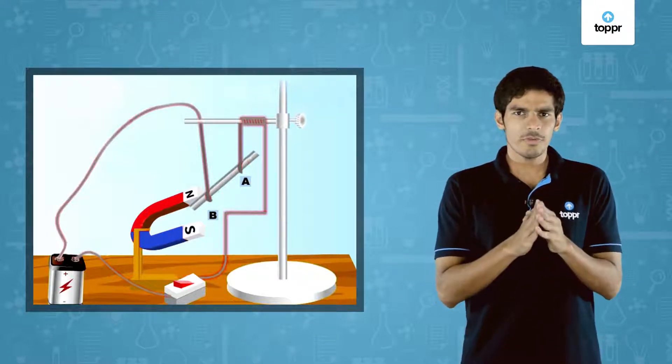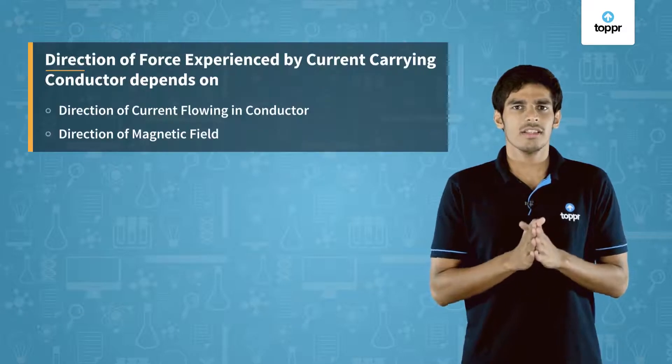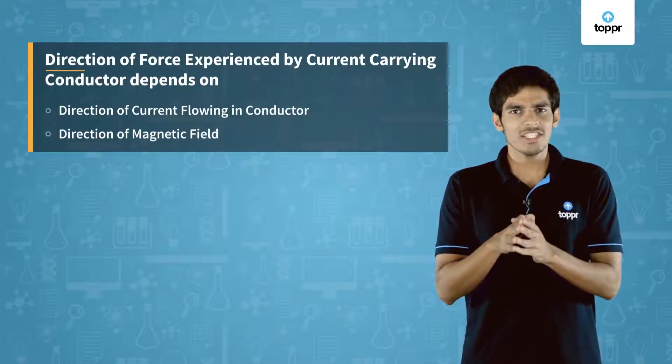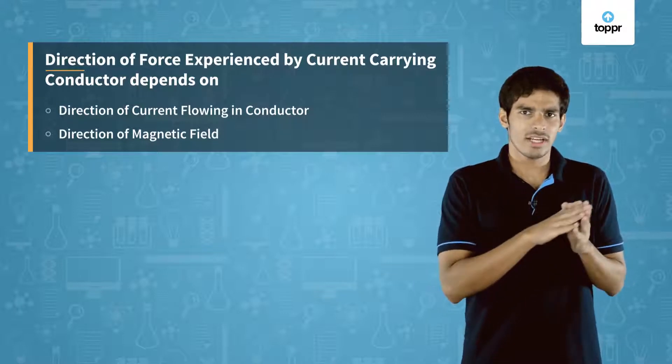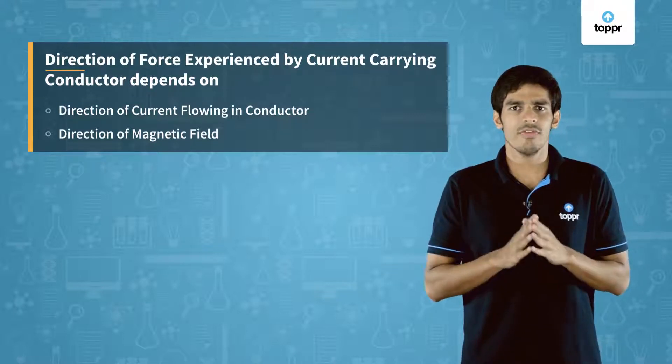From the experiment we just performed, we conclude that the direction of force experienced by a current carrying conductor in a magnetic field is dependent on the direction of current and on the direction of magnetic field.